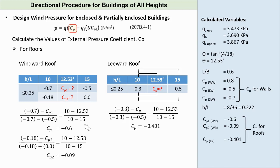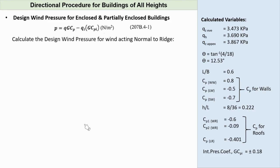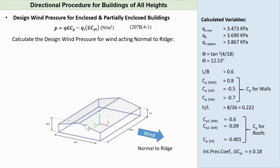Now that we have all the variables required by the formula P equals QGCP minus QI times GCPI, we can now calculate the design pressures for each load case.